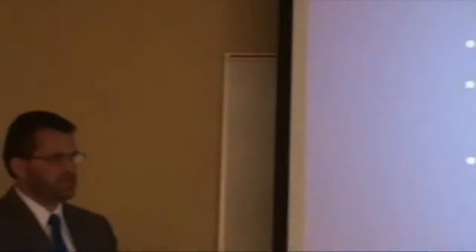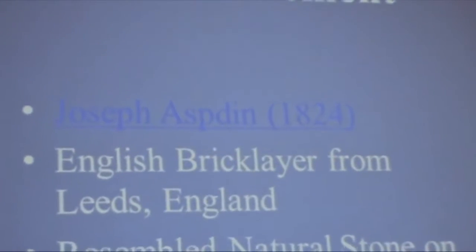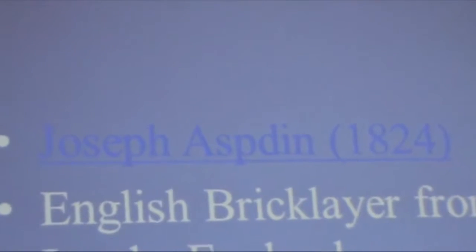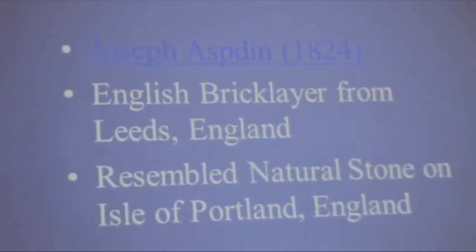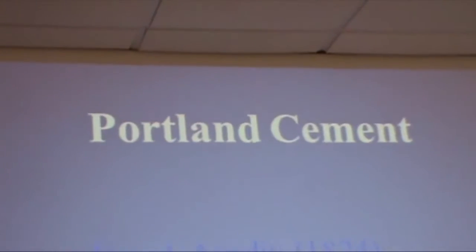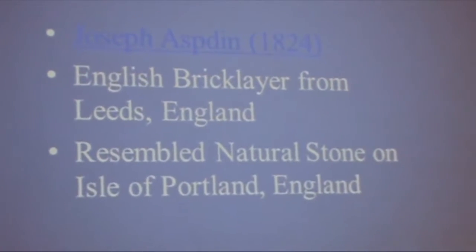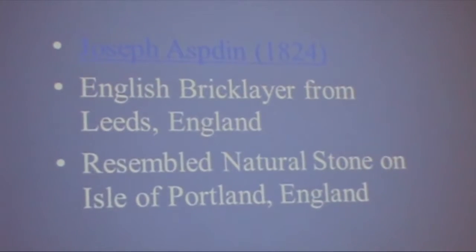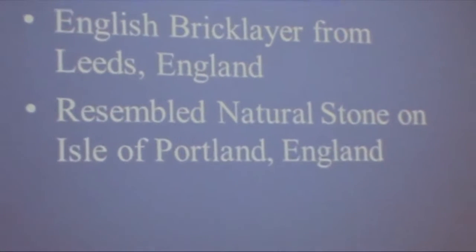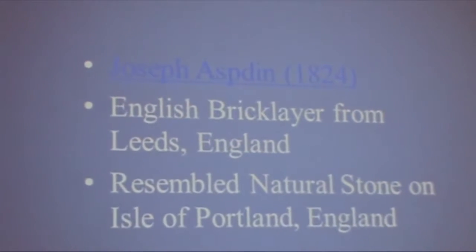After about 1000 A.D., they started to redevelop those formulas again. In 1824, Joseph Aspdin, a bricklayer from Leeds, England, experimented with various proportions of materials and developed a new formula he called Portland cement. Portland isn't a brand name — it's the common name for modern-day cement. It was named because the product resembled the natural stone found on the Isle of Portland in England.